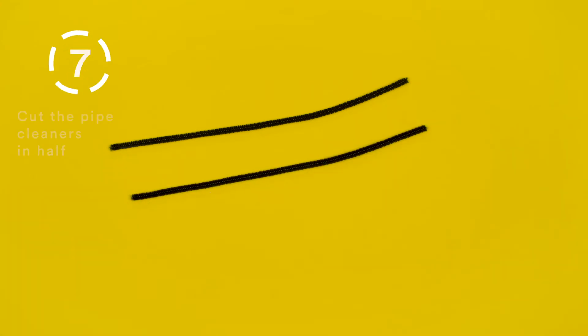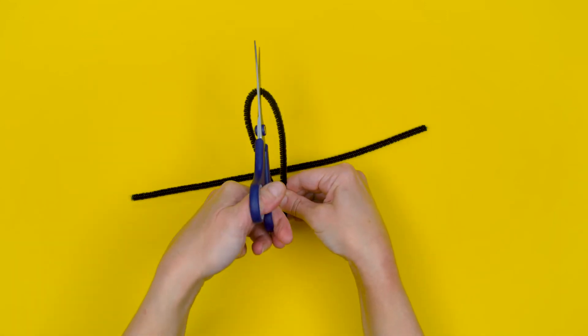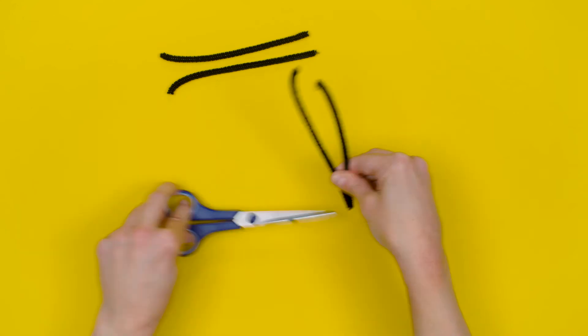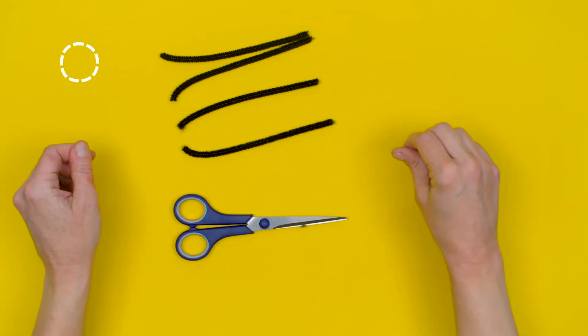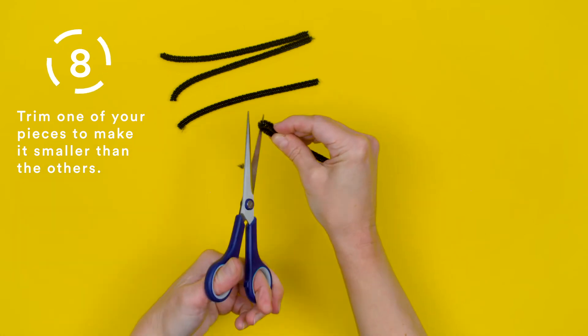Step 7. Cut the pipe cleaners in half. Step 8. Trim one of your pieces to make it smaller than the others.